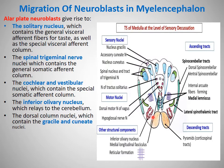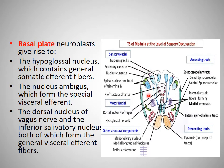The inferior olivary nucleus, which relates to the cerebellum, has detached from the alar plate to lie more ventrally. The dorsal column nuclei — the gracile nucleus and cuneate nucleus — lie posteriorly and are derived from the alar plate. The basal plate gives rise to the motor neurons in the medulla oblongata: the hypoglossal nerve nucleus containing general somatic efferent fibers, the nucleus ambiguus containing special visceral efferent fibers, and the dorsal nucleus of the vagus and inferior salivatory nucleus, both forming general visceral efferent fibers.